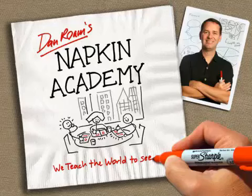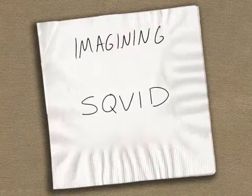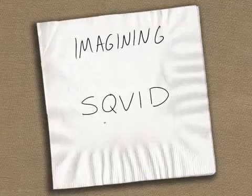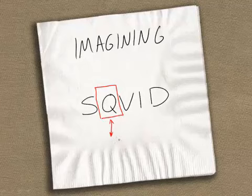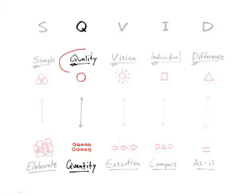This is Dan, and this is the Napkin Academy. This lesson is letter number two within the squid. This is Q, which we remember stands for quality or quantity.